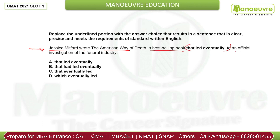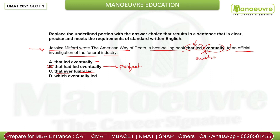Jessica McFord wrote 'The American Way of Death', a best-selling book that laid eventually to an official investigation of the funeral industry. We need to improve the underlined part 'that laid eventually.' Options: 'that laid eventually' is similar to underlined — not improved. 'That had laid eventually' — wrong, no evidence of perfect tense. 'That eventually laid' — placement is wrong. It should be 'that eventually led' — 'led' is correct and placement of 'eventually' before the verb is right. So that is your answer.